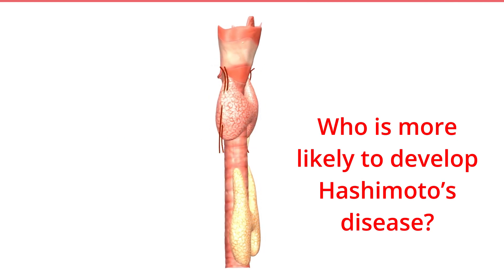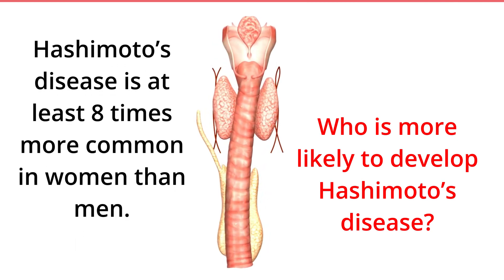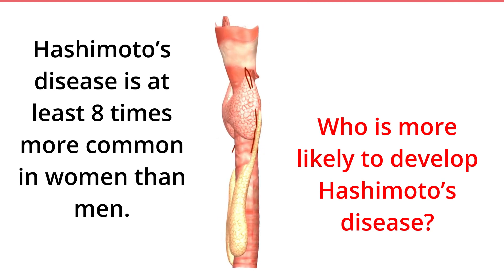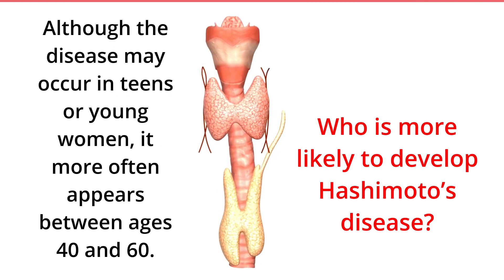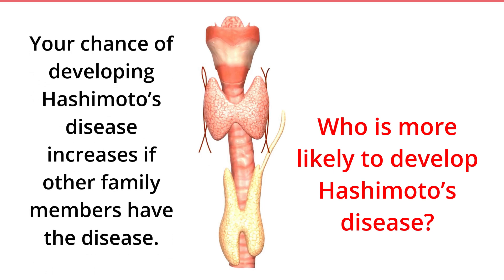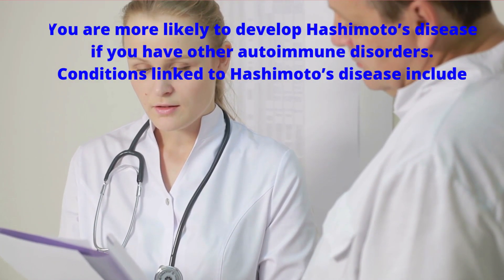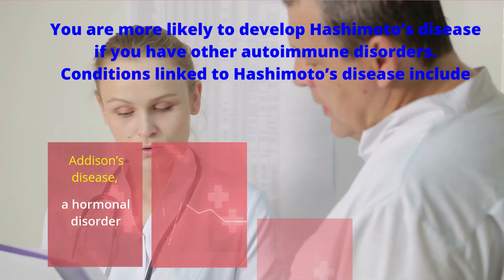Who is more likely to develop Hashimoto's disease? Hashimoto's disease is at least 8 times more common in women than men. Although the disease may occur in teens or young women, it more often appears between ages 40 and 60. Your chance of developing Hashimoto's disease increases if other family members have the disease.